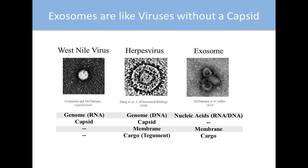You can really think of an exosome as a virus without a capsid. Exosomes transfer nucleic acids from one cell to the next. They have a very malleable cell-acquired membrane that can be taken from the endosome, in the case of exosomes, or from the plasma membrane, in the case of microvesicles. Like viruses, they transport cargo from one cell to the next.